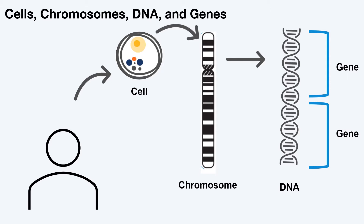Our DNA is our body's instruction manual, telling our bodies how to develop and function. Each instruction is called a gene. Chromosomes hold our genetic information, or our DNA, and keep all of our genetic information packaged into our cells.